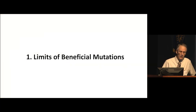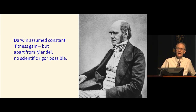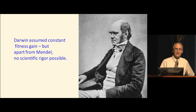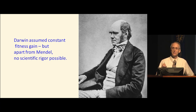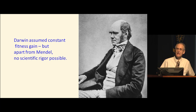Let's start by talking about the limits of beneficial mutations. Darwin believed that fitness would increase continuously through natural selection, but he didn't know what natural selection was acting on. He didn't know about genetics or Mendel or mutations. His book is largely philosophical and conceptual. With the coming of Ronald Fisher decades later, Fisher brought mathematical rigor to the understanding of selection, and he is really the father of population genetics.